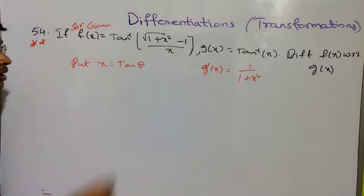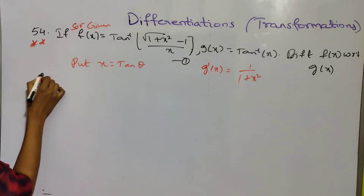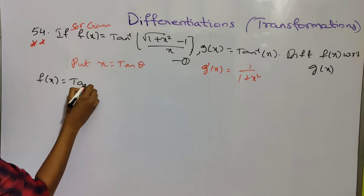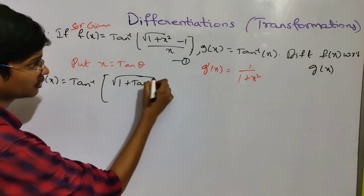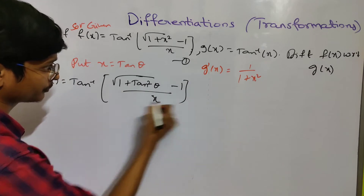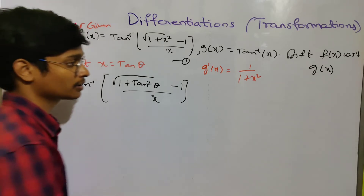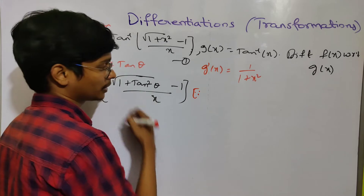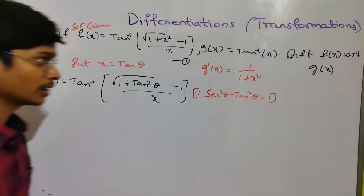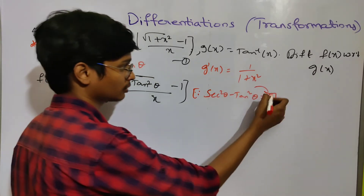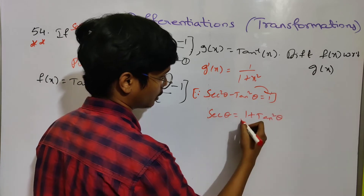We choose tan inverse and tan theta. So f of x equals tan inverse of under root of 1 plus tan squared theta, minus 1, by x. Here we use the identity: secant squared theta minus tan squared theta equals 1. So 1 plus tan squared theta gives secant theta equals the square root of 1 plus tan squared theta.